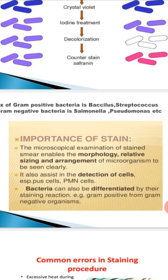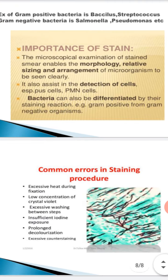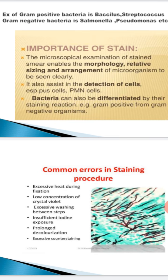These are the steps which we follow. To summarize: first, take a clean slide; put the smear on it; heat fix it; add crystal violet; wash; add iodine; decolorize with alcohol; wash again; counter stain with safranin; wash and observe under the microscope. You will see gram positive bacteria as purple and gram negative bacteria as red or pinkish. By this technique we are able to identify gram positive and gram negative bacteria. Hope you have understood. In our next practical class we will do the next experiment. Goodbye, thank you.